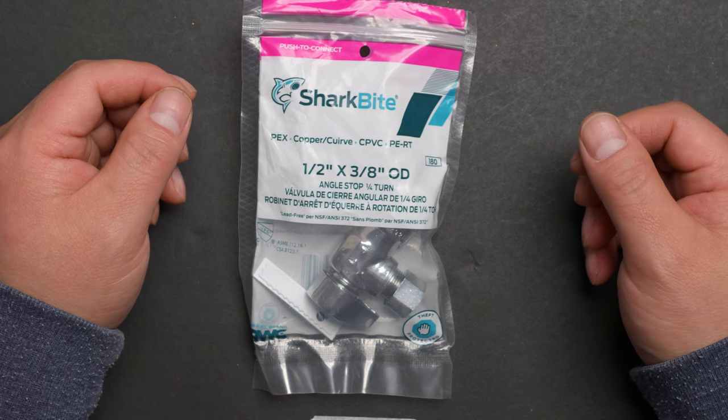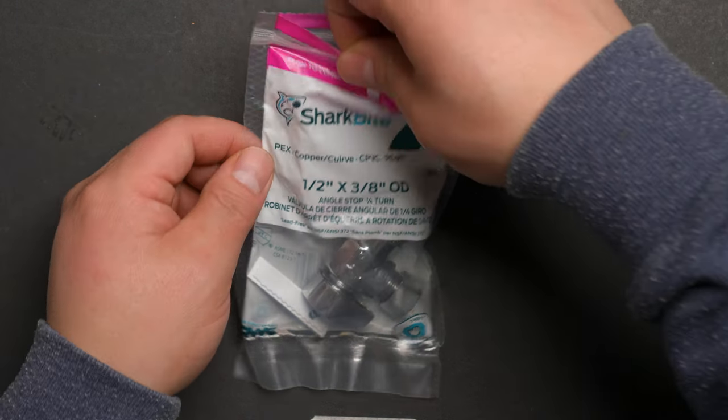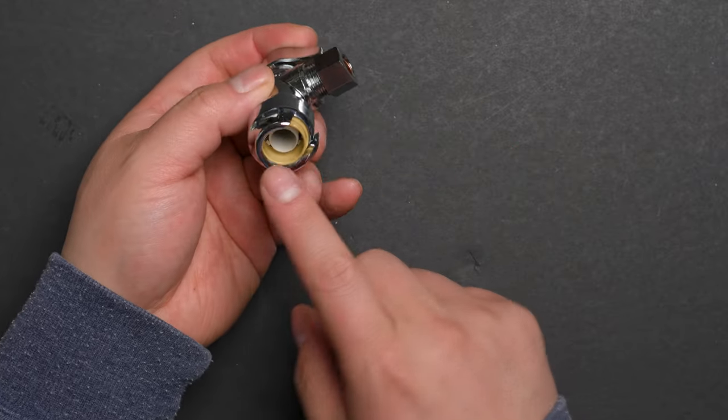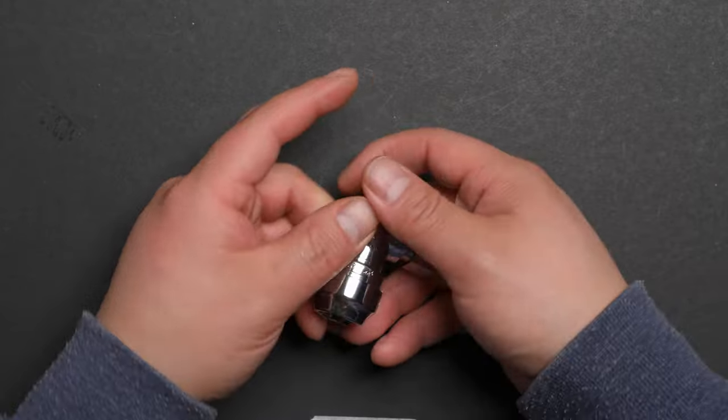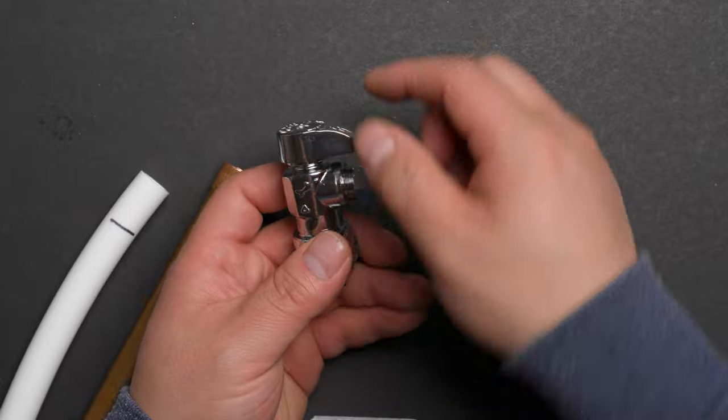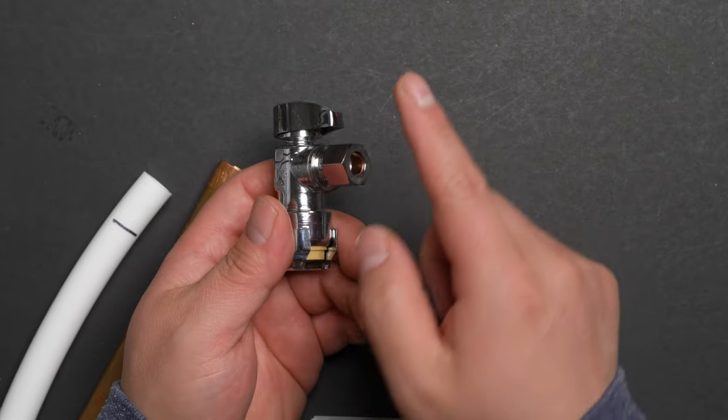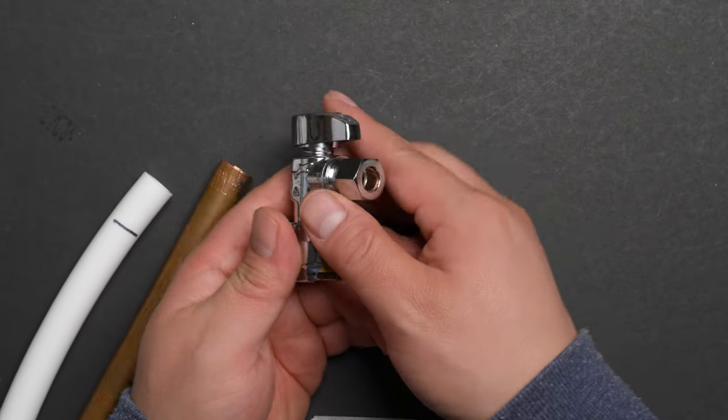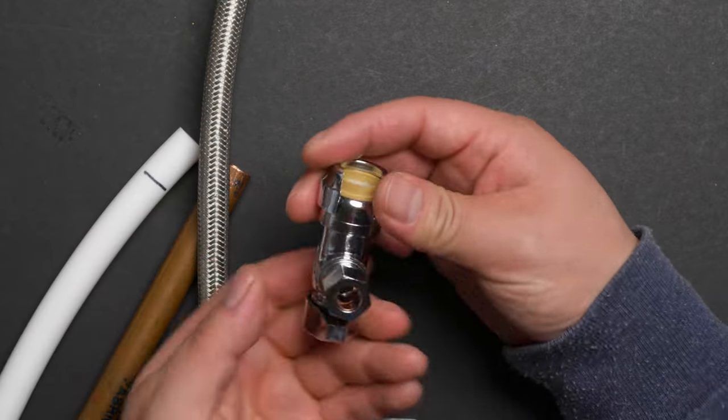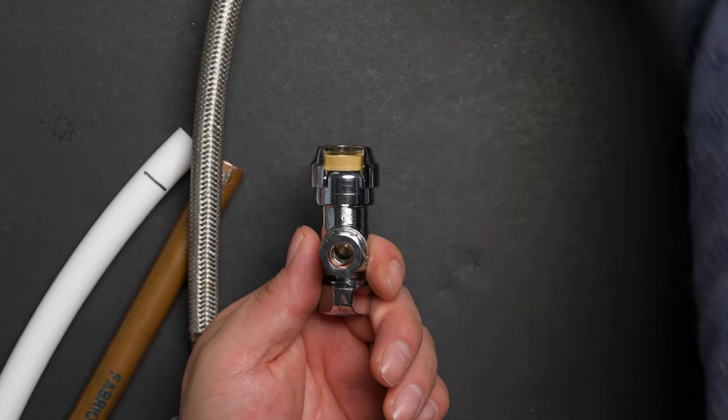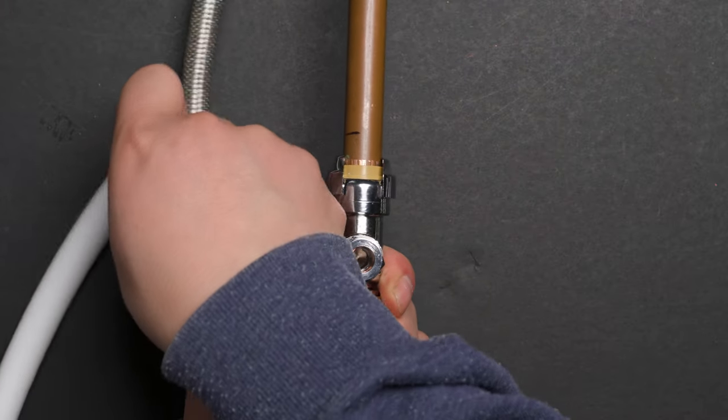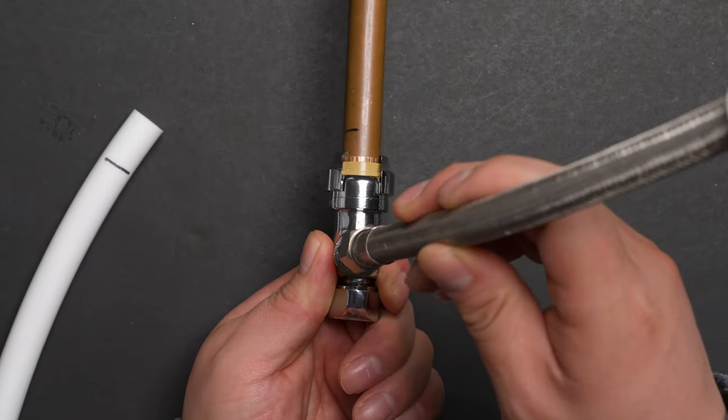This is the SharkBite angle stop quarter turn. One side can connect to half-inch copper or PEX, and there's a stop to control the water flow or shut it off. The other side connects to the pipe tube. It's best for the toilet water supply. The water line will be coming like this, and then this is connected to the toilet.